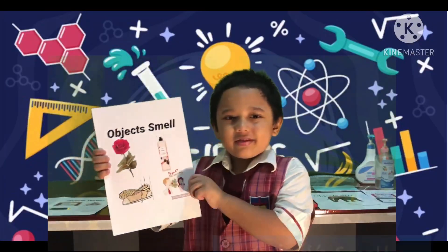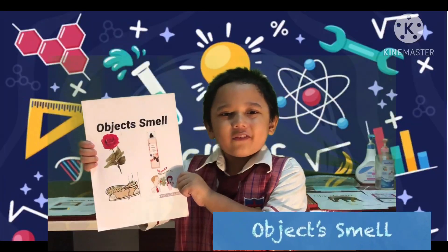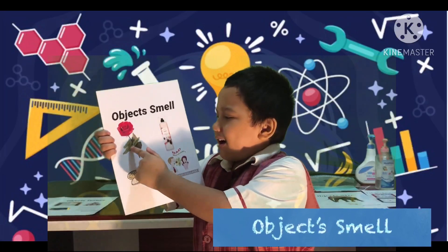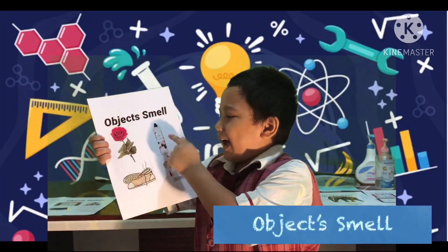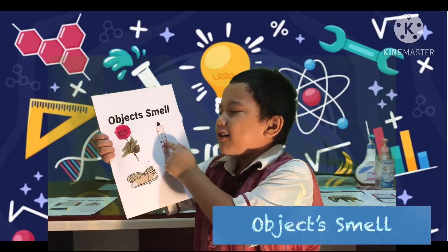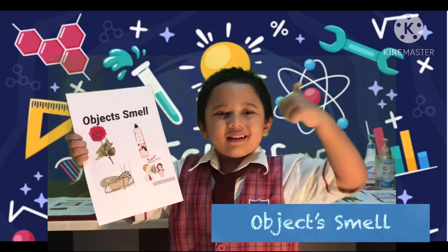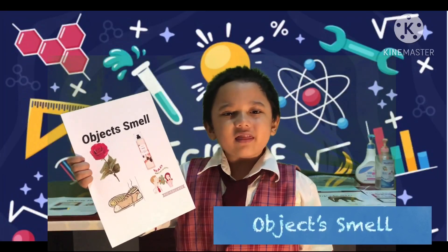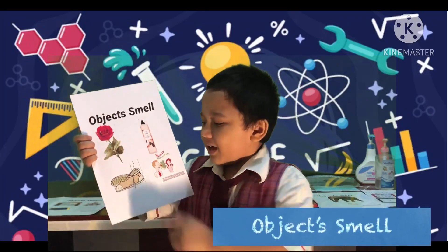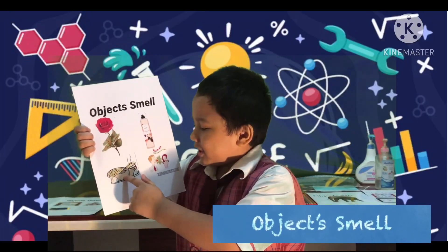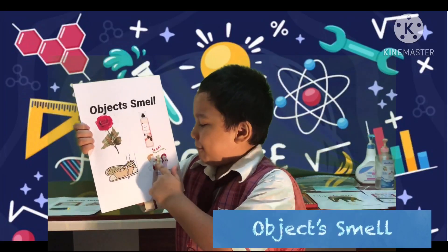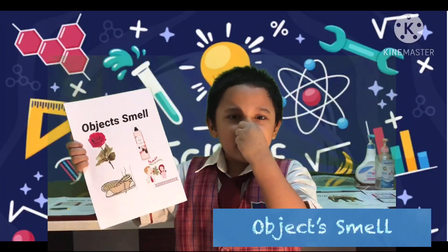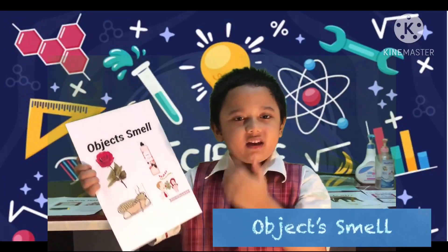This is the smell of the objects. A rose and a perfume — it smells good. How about this smell? A dirty shoe and black bread — blech, it smells not good.